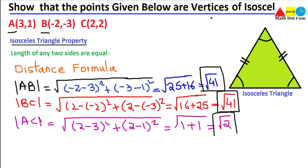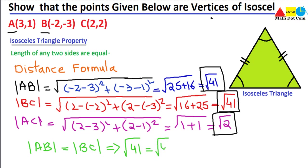So we have the lengths of all three sides: AB = √41, BC = √41, and AC = √2. It is clear that the length of AB equals the length of BC, that is √41 = √41. Hence proved that these coordinates are the vertices of an isosceles triangle. This is how you prove it when given only the vertices — identify the key property of the required triangle and apply the distance formula to verify it. That's all from today's lecture.